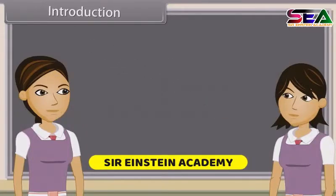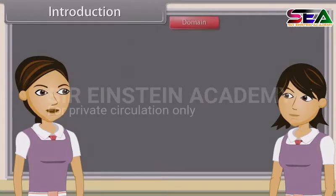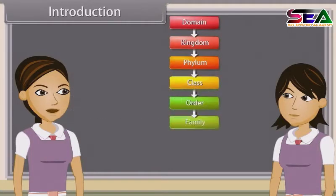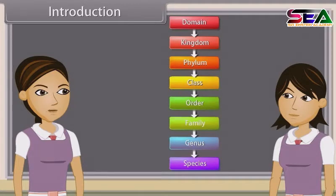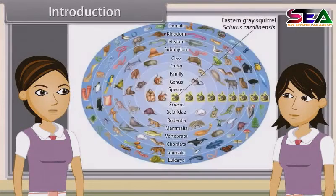Do you know what is biological classification? Biological classification, or scientific classification in biology, is a method by which biologists group and categorize organisms by biological type, such as genus or species. Modern biological classification has its roots in the work of Carolus Linnaeus, who grouped species according to shared physical characteristics. These groupings have since been revised to improve consistency with the Darwinian principle of common descent.